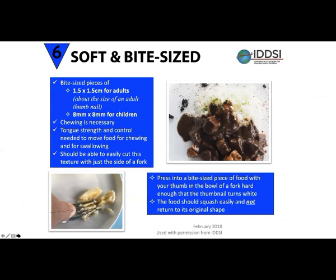For Soft and Bite-Sized (Level 6): particle sizes are 1.5 by 1.5 cm for adults — about the size of an adult thumbnail — and 8 mm by 8 mm for children. You should be able to easily cut it with the side of a fork. To check softness, press down into a bite-sized piece with your thumb in the bowl of the fork hard enough that the thumbnail turns white — that's about 17 kilopascals, related to swallowing pressure. The food should squash and completely break apart, not just show indentation marks. Both size and softness are critical.